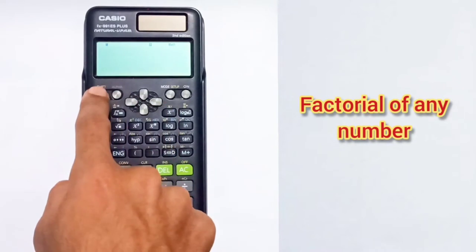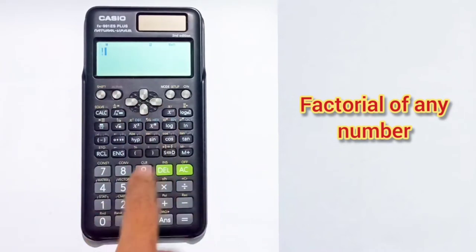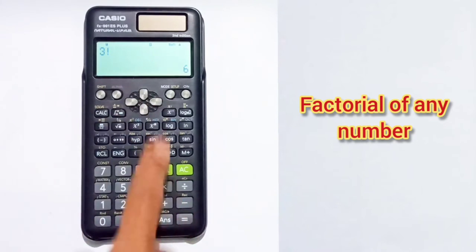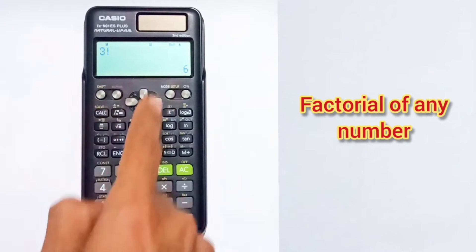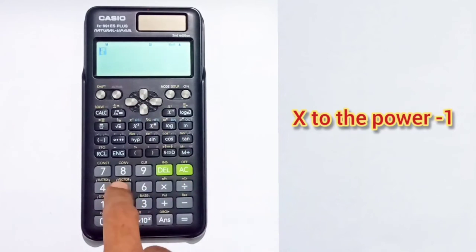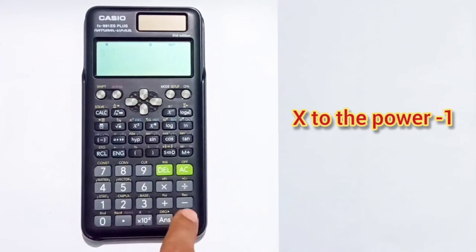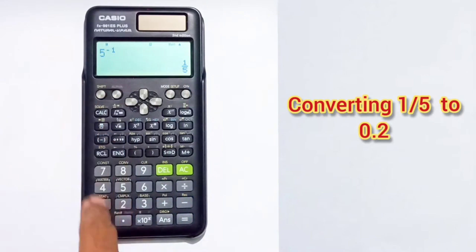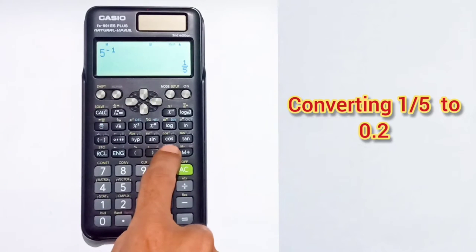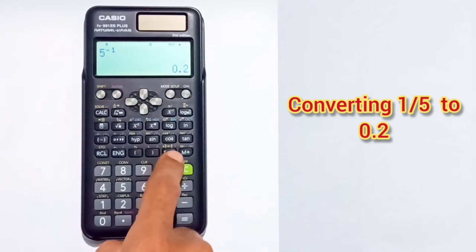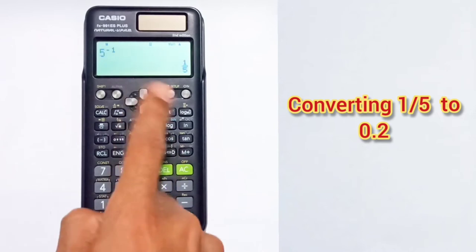To find the factorial of any number, press the number, then press Shift plus the x⁻¹ button. For example, press 3, then Shift plus x⁻¹, and you will get 3! = 6. To find x⁻¹, press any number like 5 then x⁻¹ to get 1/5. You can press the SD button to convert 1/5 to 0.2, and press it again to revert to 1/5.